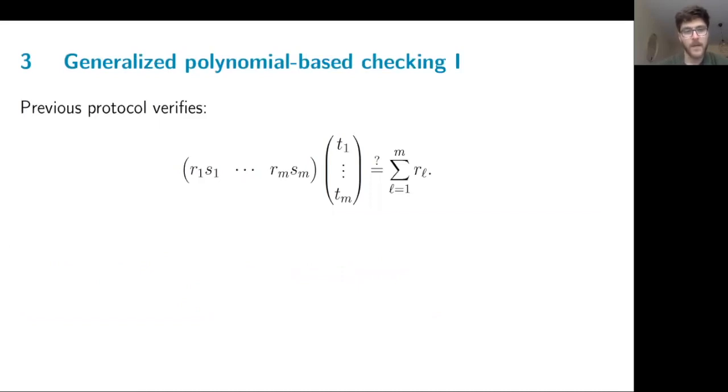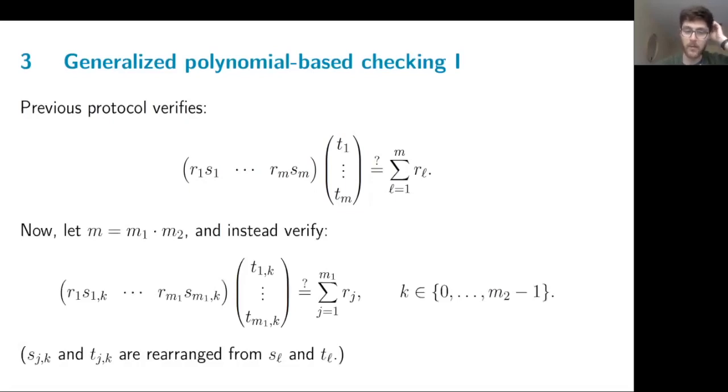But now that we have this check, we can further improve it. And to see how we do this, first let me rewrite, in some sense, what we are verifying. So the horizontal vector here is the S polynomial with the randomized coefficients added. And what essentially we are checking is that the inner product of this randomized vector with the vector of injected inverses should equal to the sum of the random coefficients. What we can do is factor our number of nonlinear gates M into M1 and M2. And instead of verifying one inner product of size M, we're going to verify M2 inner products, each of size M1. So we just rearrange our S and T values to fit into these inner products.